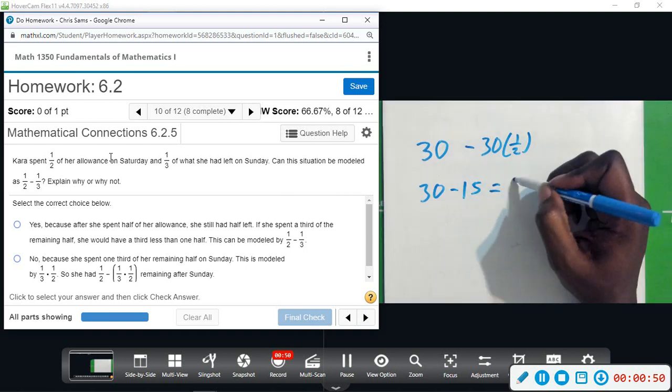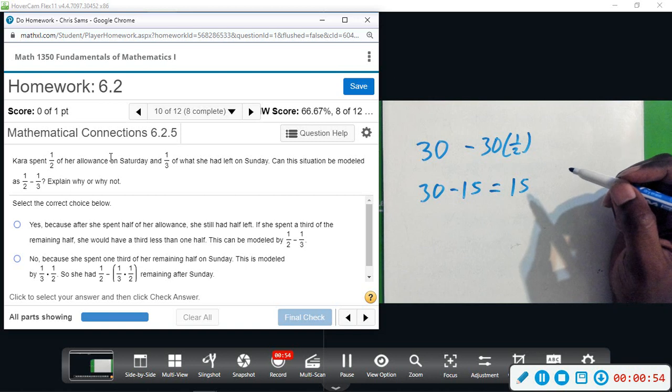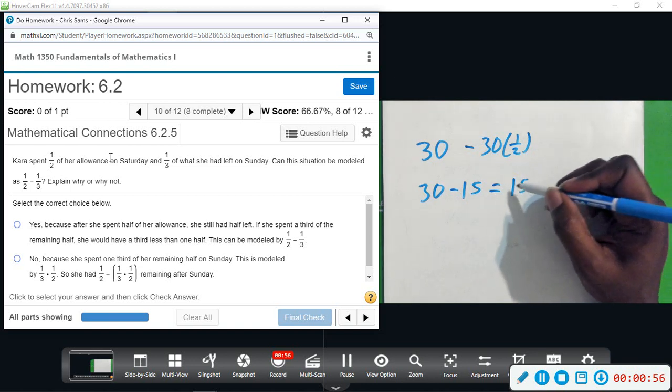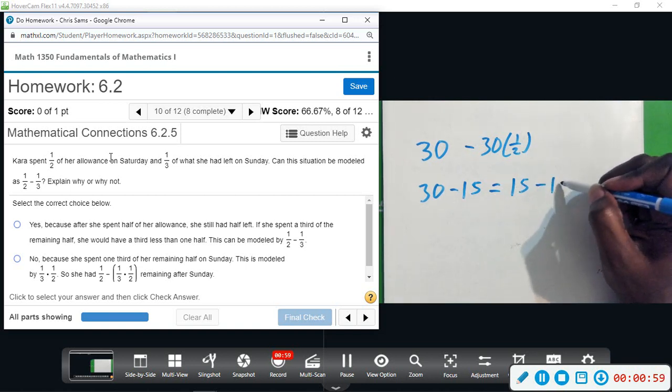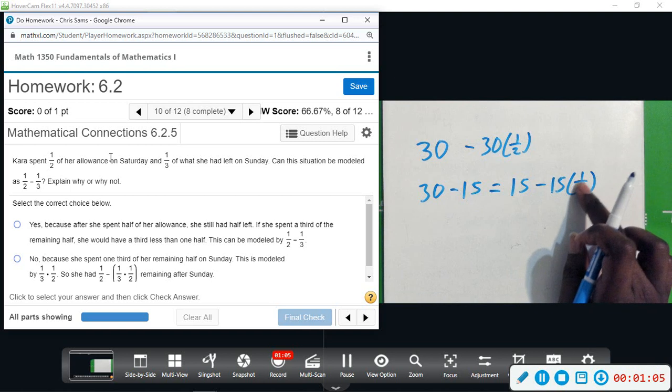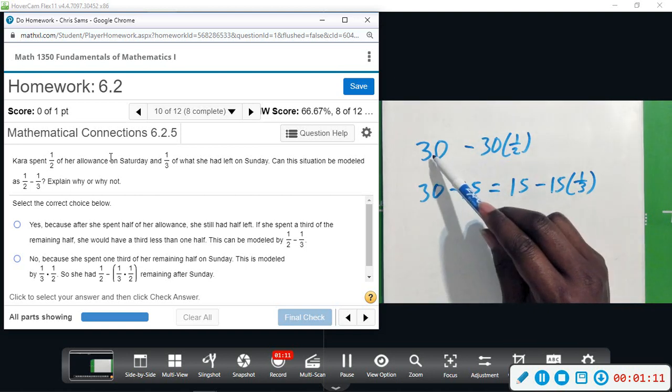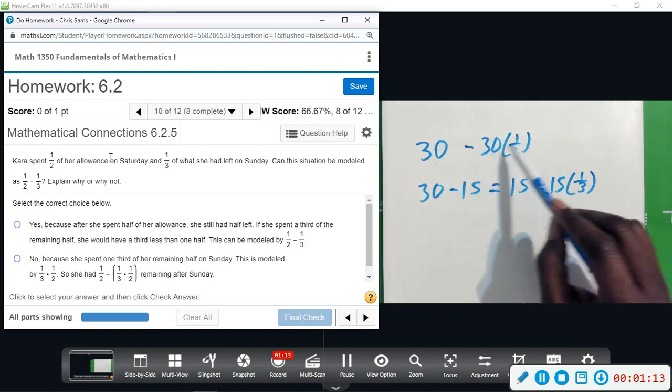So she had 15 left, and then it says she spent a third of what she had left. So she spent one-third of this 15, which is not the same as just saying one-third or just minus a half. So depending on what the dollar amount is, a half is going to be different depending on how much